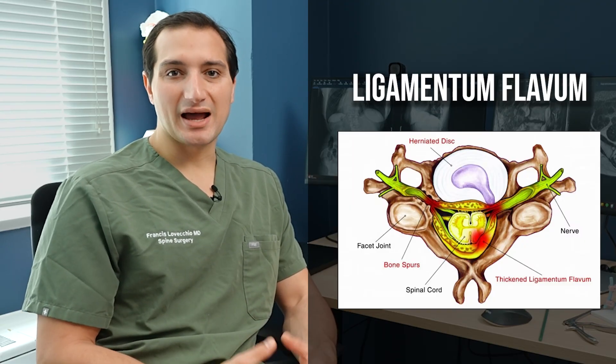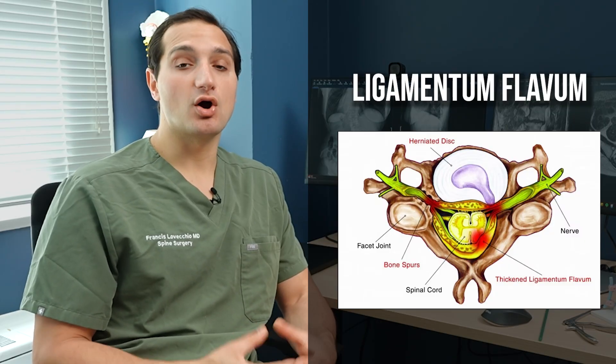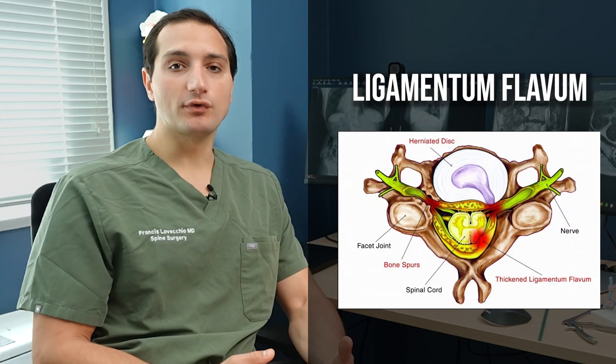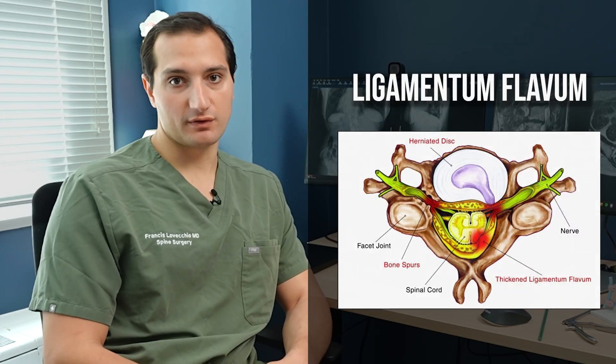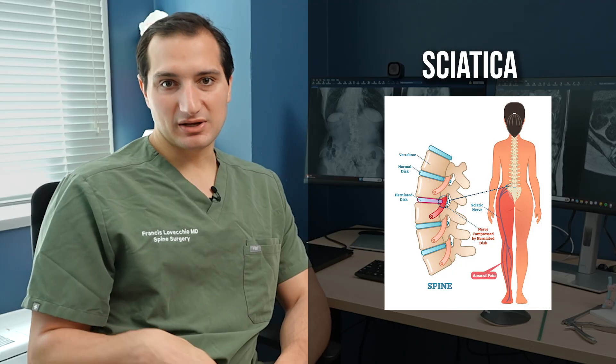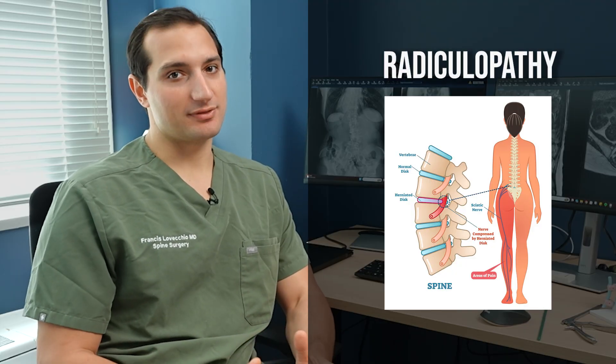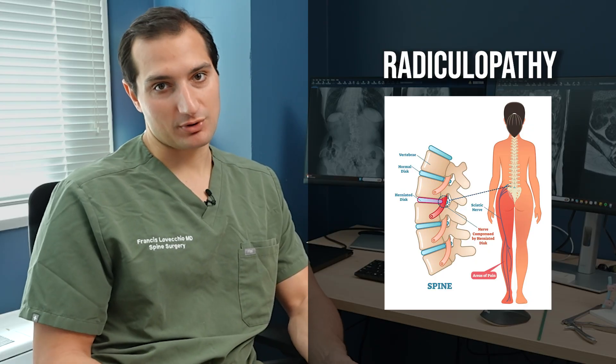The ligamentum flavum tends to get hypertrophied — it overgrows when degeneration in the spine happens — and this overgrowth causes pressure on the nerves. So the most common thing I'll see in a patient with degenerative scoliosis is leg pain from the nerves getting compressed. A lot of times people call this sciatica, meaning just a pain coming down the leg. The official term is radiculopathy, which means a nerve root is getting compressed.